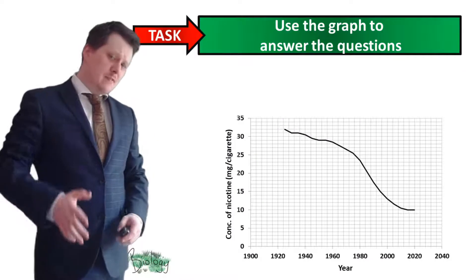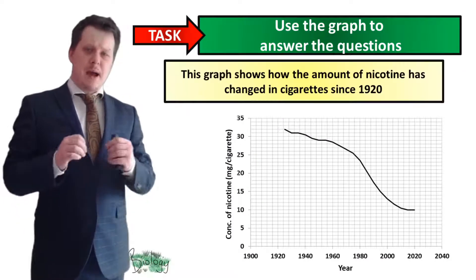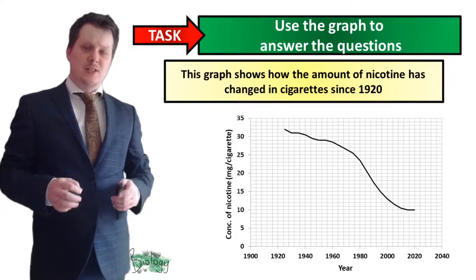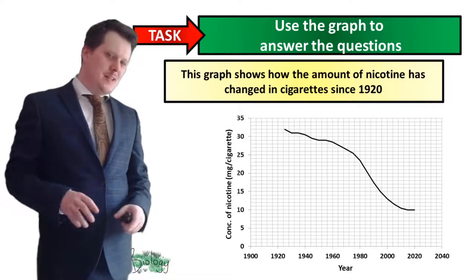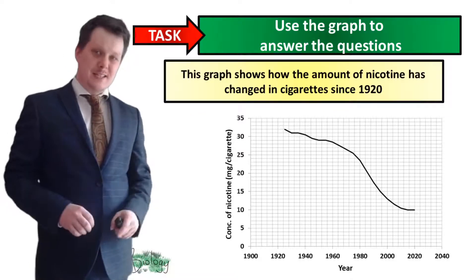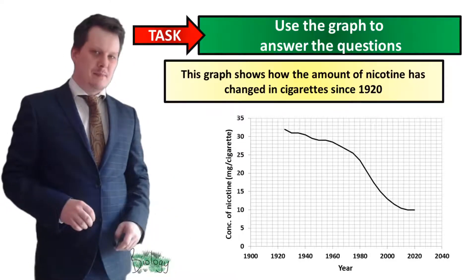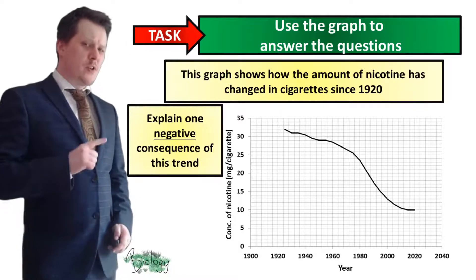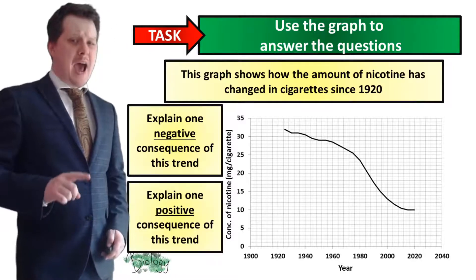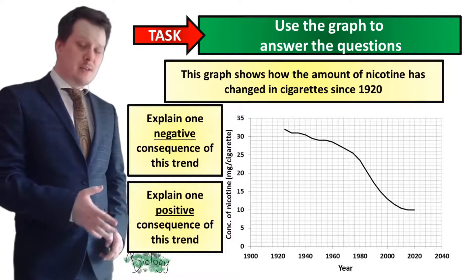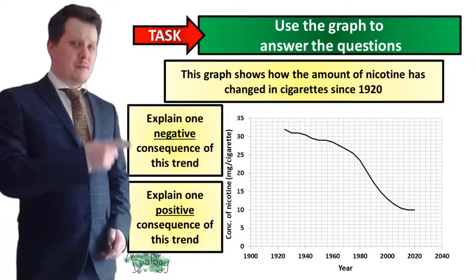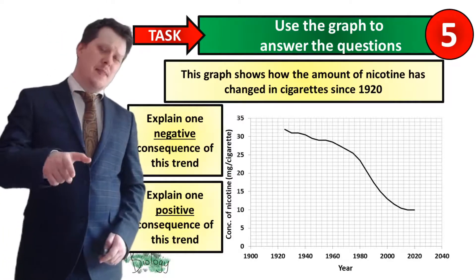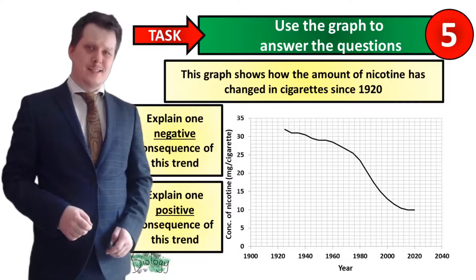We've got one more graph to look at, which shows how the amount of nicotine in cigarettes has changed since 1920. We can see that the amount of nicotine in cigarettes has actually gone down over time. Explain one negative consequence of this trend and one positive consequence. Five seconds on the clock — pause if you need more time.